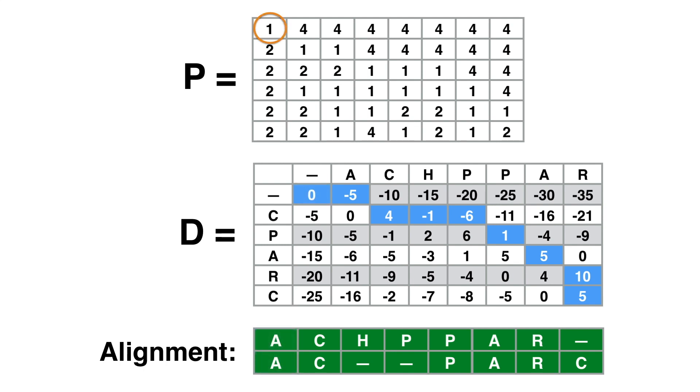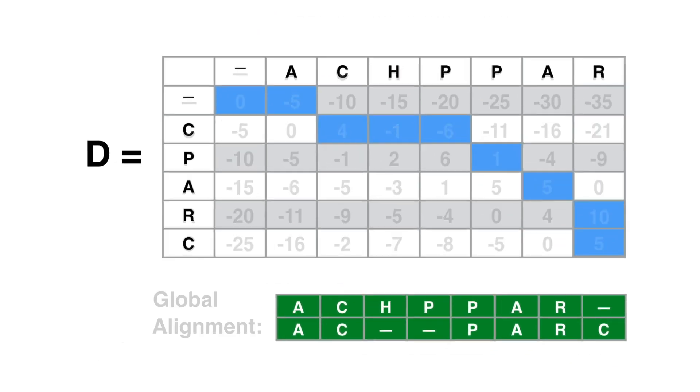For us it's a tedious process, but for a computer it's a very simple one. Indeed, this process is the cheapest as it takes only N plus M steps. This is expressed by saying that the backtrack is order M plus N, or simply N if M equals N. The path left by the backtrack is in fact the graph of the global alignment.